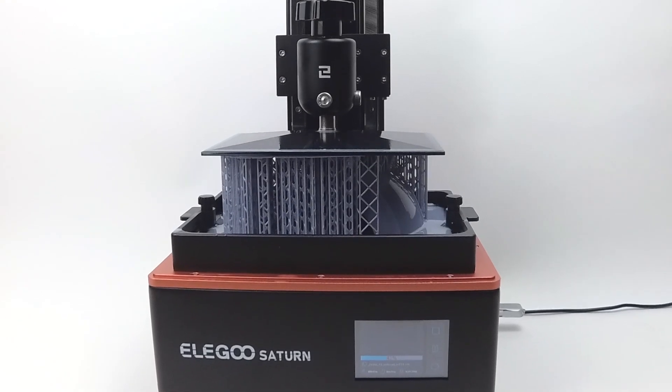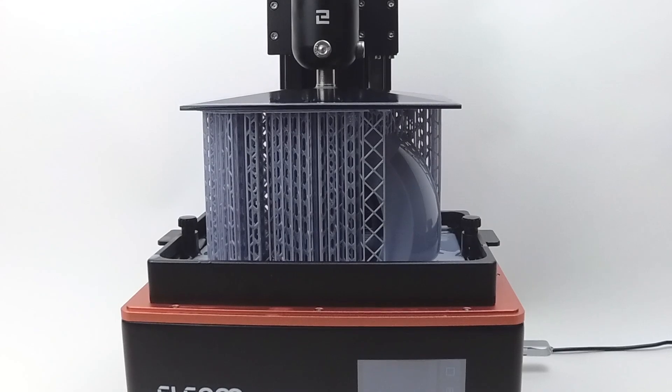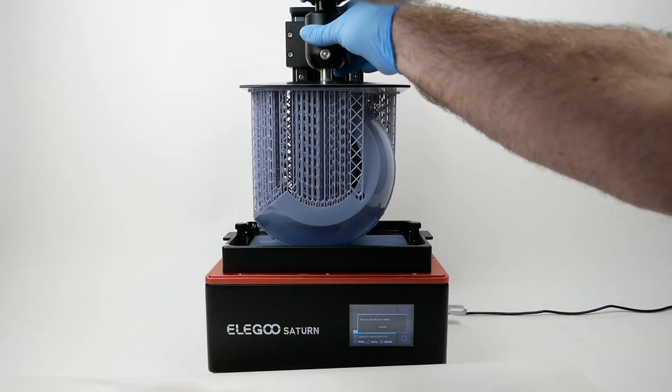Since the Saturn uses a monochrome LCD screen, it prints significantly faster than older printers, but a model like this that maxes out the entire build platform can still take 10 hours or more to print.